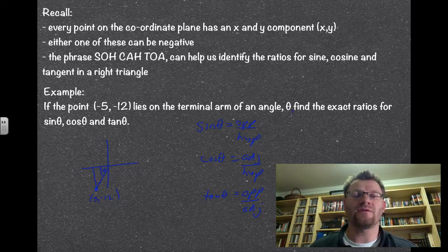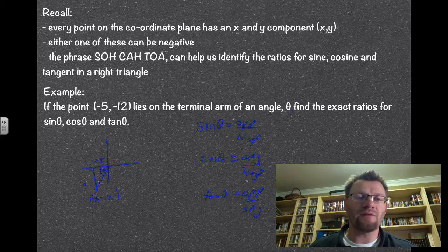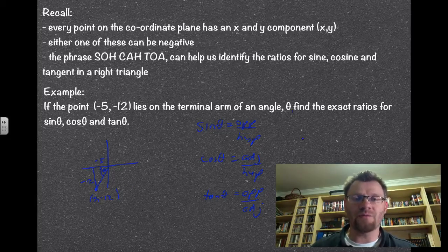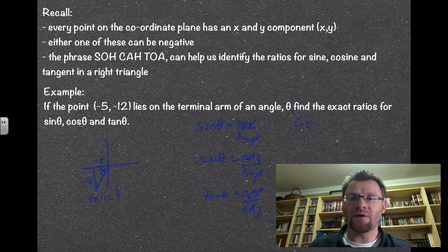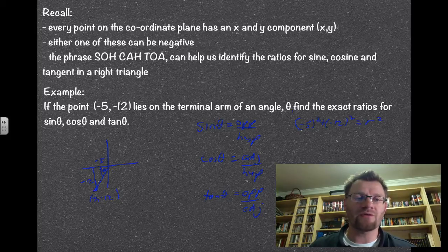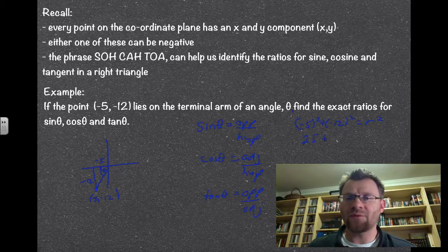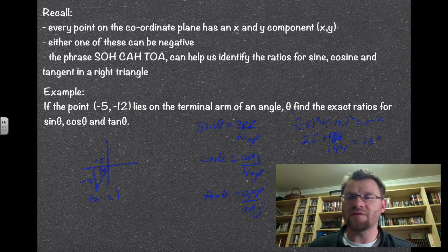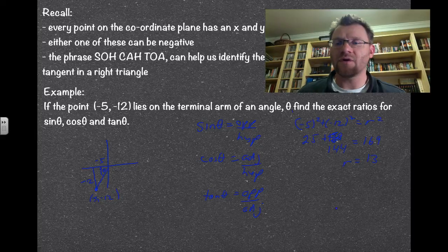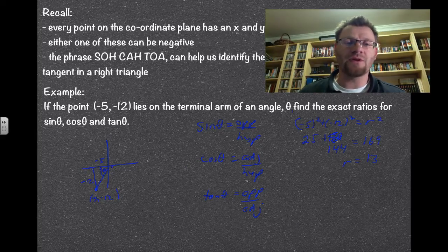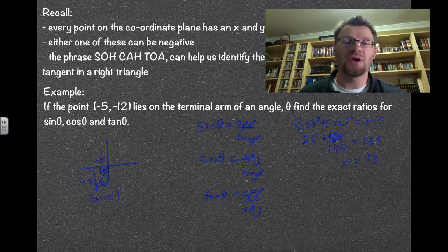Now we need to find the lengths of these sides. The horizontal side is negative 5, because it's 5 to the left, and the vertical side is negative 12. We can find the third side, the hypotenuse, by using the Pythagorean theorem. That would be (-5)² + (-12)² = r². We call that the radius vector, or r. So that's 25 + 144 = 169. The square root of that is 13, so r = 13. The radius vector r is always going to be positive, while x and y can change.